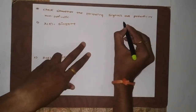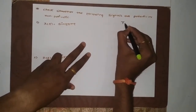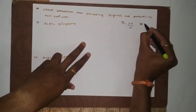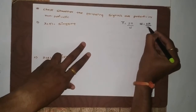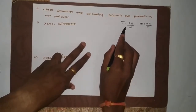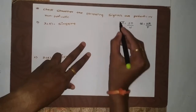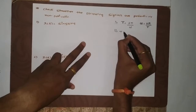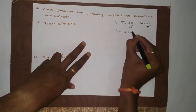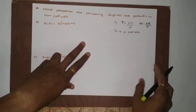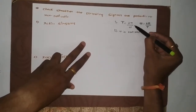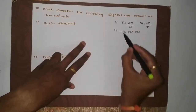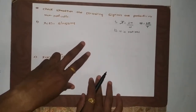First, find the time period using the equation: omega equals 2π divided by T, or 2π times f. From this you can find the total time period T. In the second step, check whether the time period is rational — meaning a ratio of two integers. Only if both numerator and denominator are integers is the signal periodic in nature.